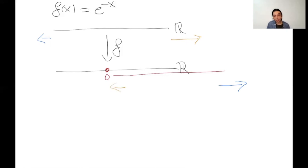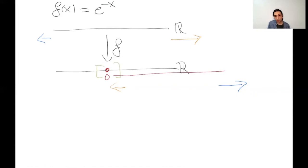This is actually a homeomorphism between the real line and the set of positive real numbers, but it is not proper. If we consider a compact subset near zero and take its pre-image, the pre-image is a neighborhood of infinity — it is unbounded and therefore not compact. So there are embeddings that are not proper maps.